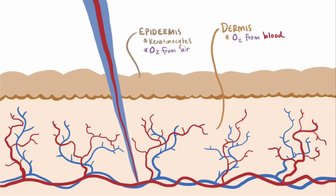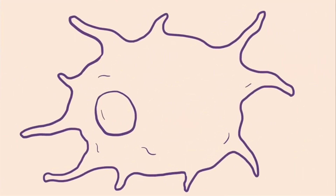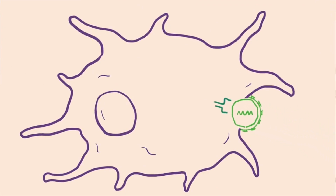Since the proboscis goes through both the epidermal and the dermal layers, the cells in those layers are susceptible to infection by the Zika virus. So in addition to keratinocytes, fibroblasts and dendritic cells have also been found to be permissive to Zika virus, meaning they have some sort of receptor or attachment site that basically says, come on in.